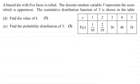Hi there. Now for parts D and E of this question, we're told that a biased die with five faces is rolled. The discrete random variable Y represents the score which is uppermost. The cumulative distribution function of Y is shown in this table here. We've got to find the value of k for one mark, and in part E find the probability distribution of Y for three marks.